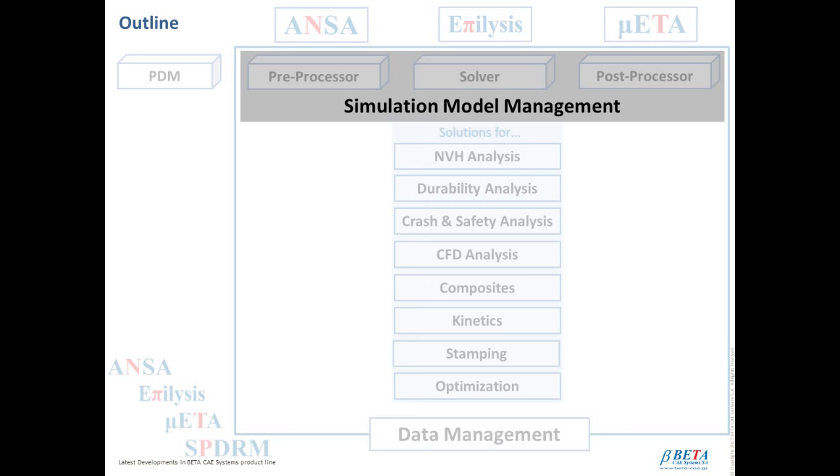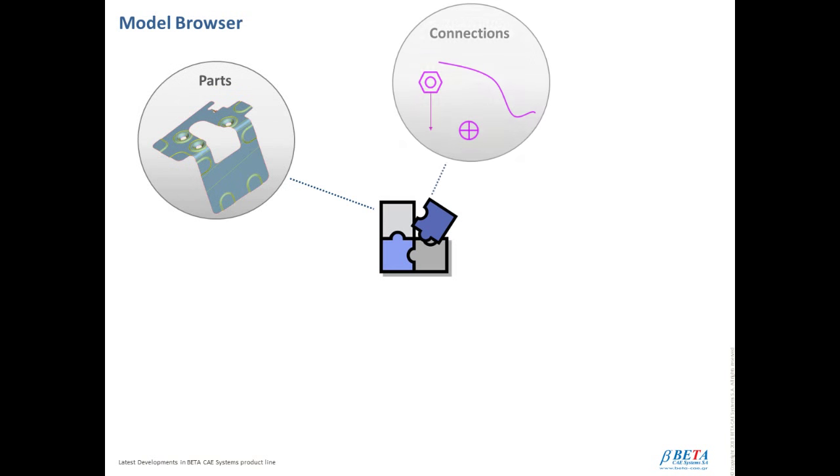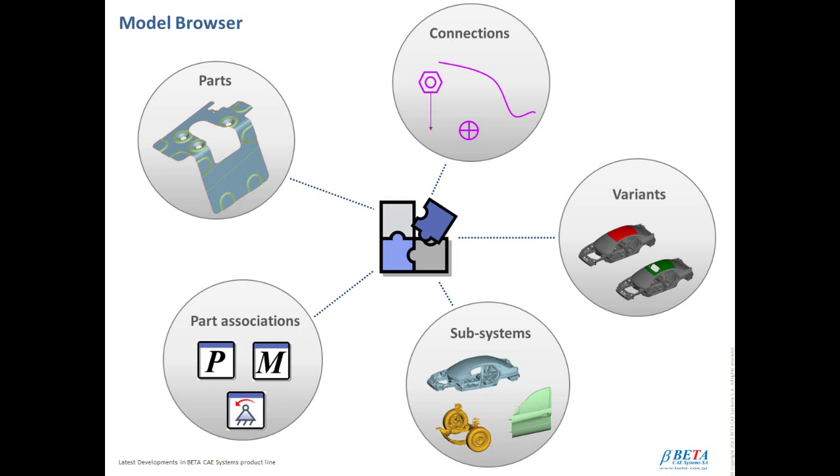The setup of the simulation model in our software reflects the deep understanding of the demands of simulation and its role in enterprise. Towards this direction, we have introduced the model browser in ANZA version 16, which offers a direct reference to all entities that belong to a part or group. In other words, it offers a direct reference to parts, connections, variants, subsystems, and part associations as well.